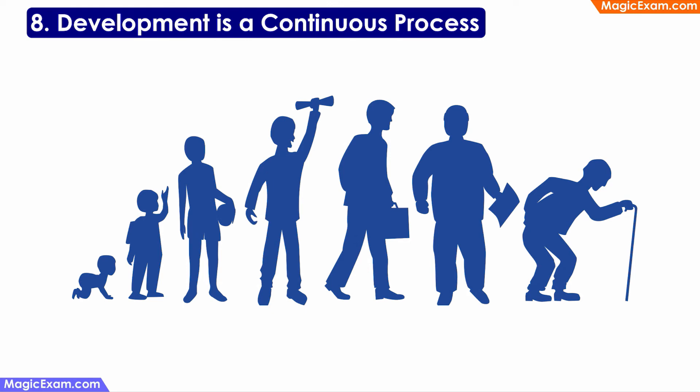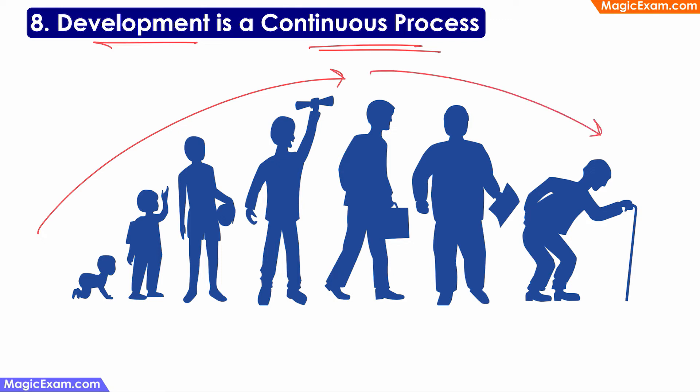The last important principle is that development is a continuous process. Development cannot be stopped because it has various aspects — physical development, mental development, social development, moral development, and emotional development. So even if physical development stops after a particular period, the other types of development will continue for the duration of the person's life. Therefore, development is a continuous process which cannot be stopped anywhere.